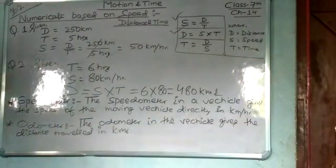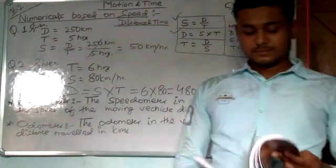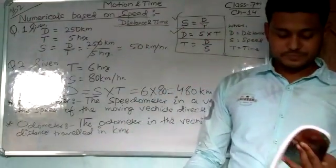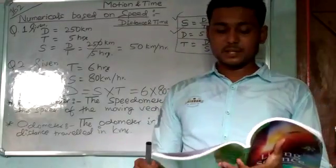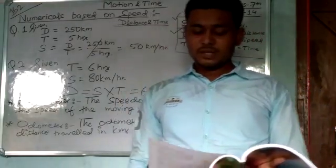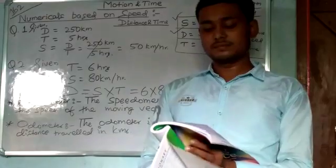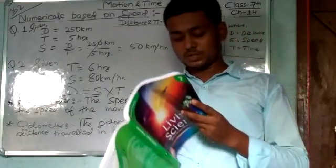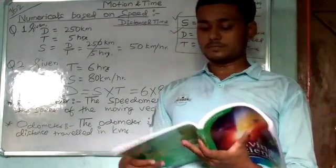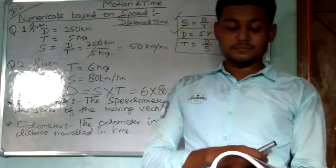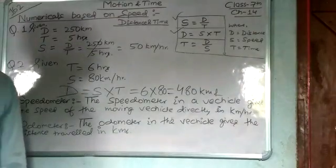You need to summarize everything taught during this class. The key topics covered are: measurement, physical quantities, standard unit, SI unit, sand clock, sundial, simple pendulum, oscillation, time period, length of pendulum, pendulum clock, stopwatch, speed formulas, numericals, speedometer, and odometer.